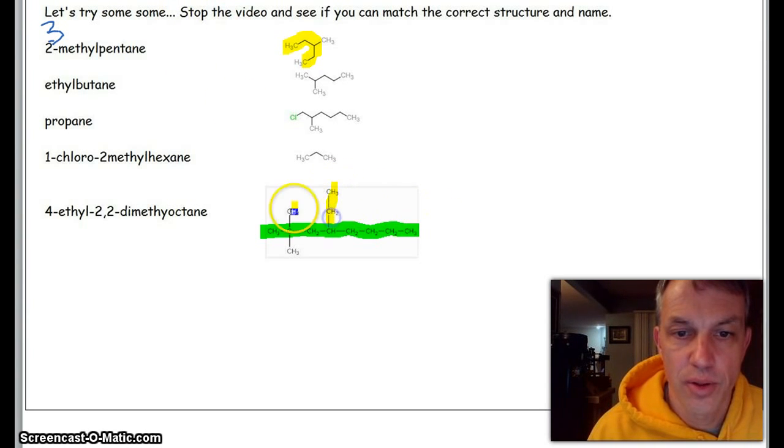So you go one, two, three, four, five, or you go one, two, three, four—first point is here, it's lower numbers. And again, ethyl comes before methyl, so it's 4-ethyl. There's the fourth carbon—2,2-dimethyl.